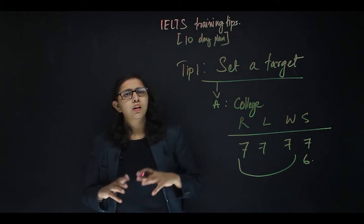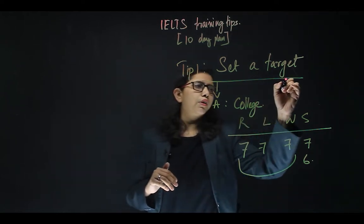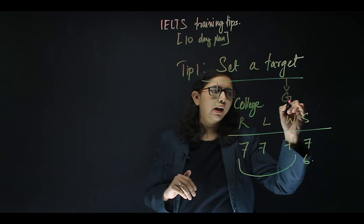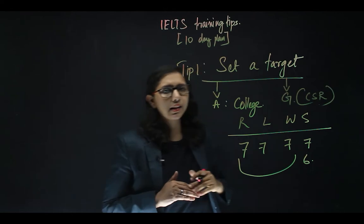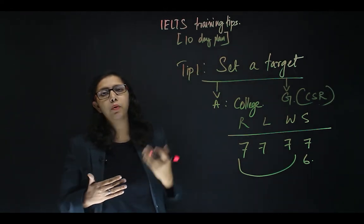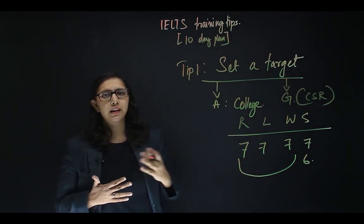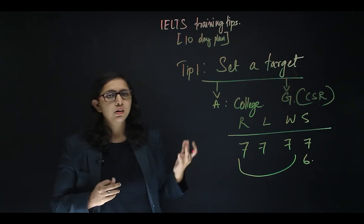If you are going for the general category of IELTS, you will have to first check your CRS score and see what is the additional point that you're going to get by getting an IELTS band. This will determine what is your target band.